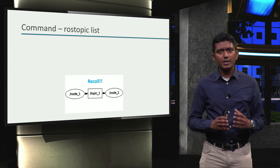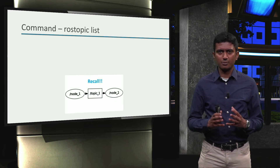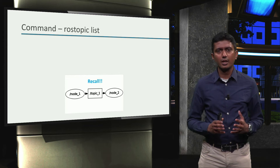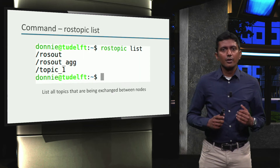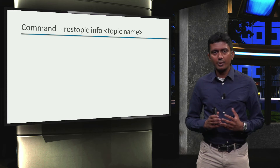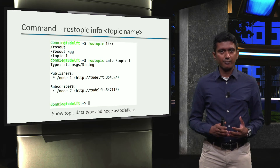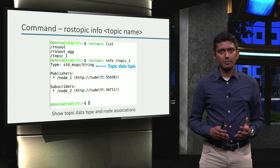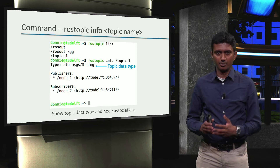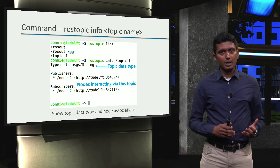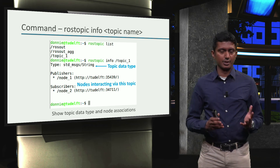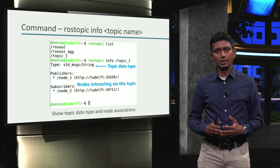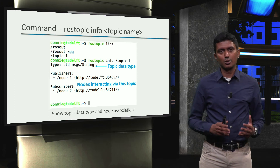Recall that we had seen this graphical representation of an example ROS application in the previous module, with topic_one exchanged between node_one and node_two. Now, the command `rostopic info <topic_name>`. In this example, we are finding information about topic_one. This command displays the topic data type in the first line of the terminal output. Following this, information regarding which nodes are communicating via this topic is published. In this case, we see that node_one and node_two are interacting with each other via topic_one.